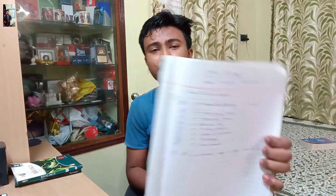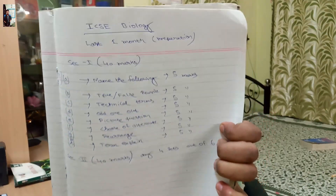The question types in Section A include: fill in the blanks, true and false, rewrite the following sentences, technical terms, odd one out, picture questions, choose the correct answer, rearrangement, and terms. These are all the things in Section A - that's 40 marks. You can easily score above 38 out of 40 because this section is not so hard.